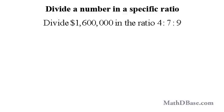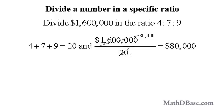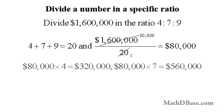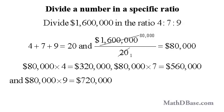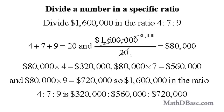Harry states in his will that he will leave $1,600,000 to his three sons in the ratio 4 to 7 to 9. How much will each son receive? The sum of the terms is 4 + 7 + 9 = 20, so $1,600,000 is separated into 20 groups of $80,000 each. The first son receives $80,000 × 4 = $320,000; the second son receives $80,000 × 7 = $560,000; and the third son receives $80,000 × 9 = $720,000. Checking: $320,000 + $560,000 + $720,000 = $1,600,000.